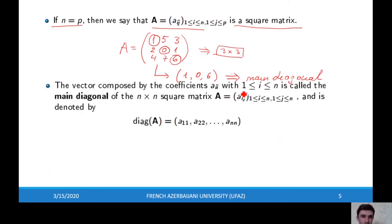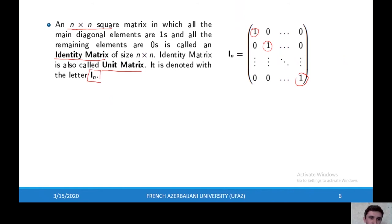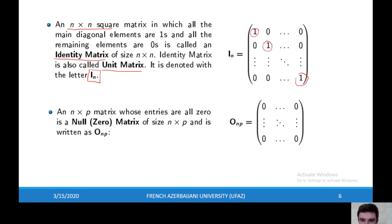For the main diagonal we will use a specific notation. If all diagonal elements of an n times n square matrix are ones and the remaining elements are zeros, this type of matrix is called the identity matrix or unit matrix, and we use the notation I_n. If all coefficients of an n times p matrix are zero, then this type of matrix is called the null matrix, and we use the corresponding notation for it.